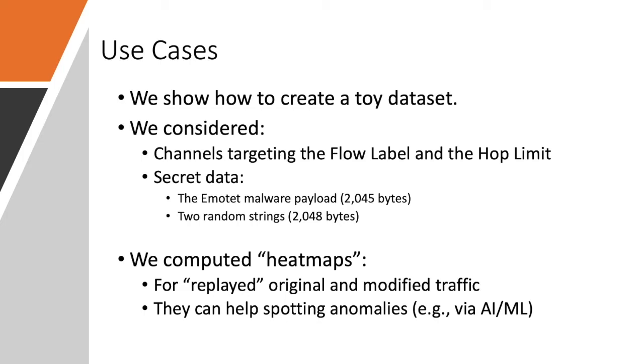Now, I want to show you how to use pcapStego to create metrics that allow us to spot the presence of network covert channels. For example, via artificial intelligence and machine learning algorithms. So, with the same setup introduced earlier, CAIDA traces and on the same machine, we considered the channels targeting the flow label and the hop limit field. And the secret data, considering emulated malware payload and true random strings. These secret data are embedded through the usage of the pcapStego. And we computed heatmaps, which are a representation of the distribution of the values of the flow label and the hop limit. And we compared the original traffic heatmap with the modified traffic heatmap.